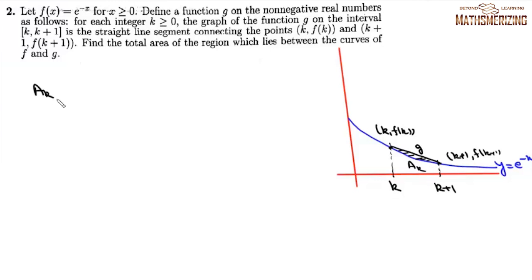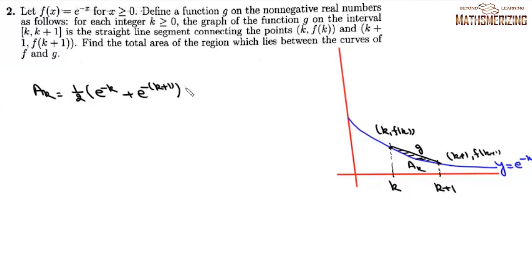A_k is given by the area of the trapezium minus the area bounded by the curve e^(−x). The trapezium area is (1/2)(e^(−k) + e^(−(k+1))) · 1, and we subtract the integral from k to k+1 of e^(−x) dx.